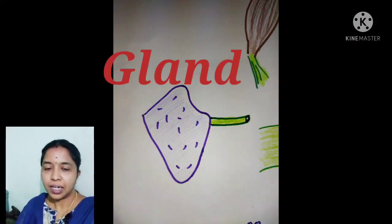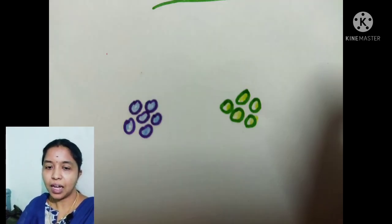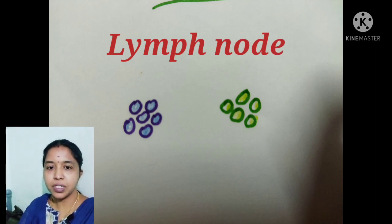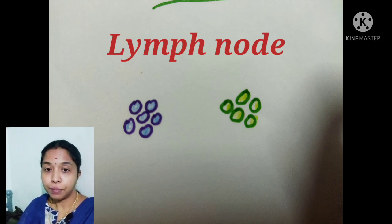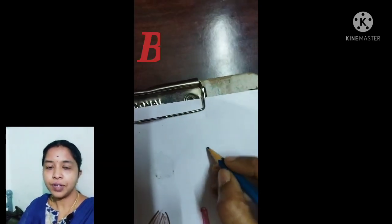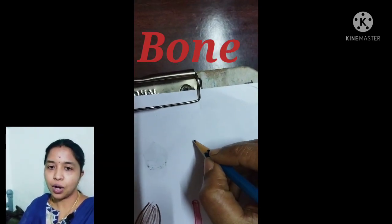For the glands — such as the submandibular gland and parotid gland — we use violet color. For the lymph nodes, again light green color or violet color. For the bones, we can use the pencil to draw the outline.